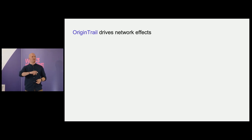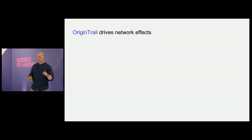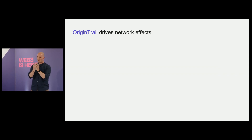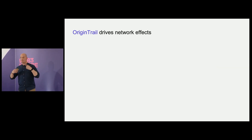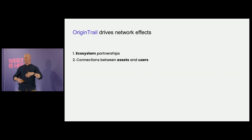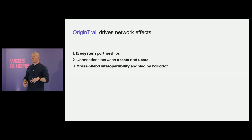To finish: why we're doing this is to catalyze network effects — what the big Web2 companies did. Google won the search engine fight by implementing PageRank, which exploited connections between websites: the more connections a website had, the more relevant it was, giving better search results. All Web2 companies leveraged network effects. To bring these same network effects to Web3 in a decentralized way, we do three things: ecosystem partnerships, connections between assets and users — much like Google did for websites — and cross-Web3 interoperability, enabled by Polkadot with all the features mentioned throughout the day.